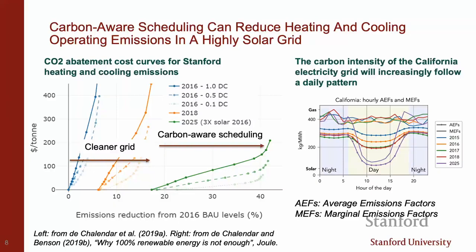By having a fully electric system, there are two benefits to Stanford's operating emissions for heating and cooling. First, as the grid gets cleaner, Stanford's carbon footprint automatically goes down. Second, as we move toward a world with a big difference between day and night carbon intensity, there's more value in shifting electricity consumption throughout the day — something you can do really well with thermal storage.